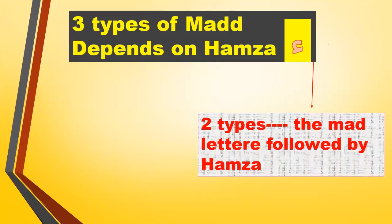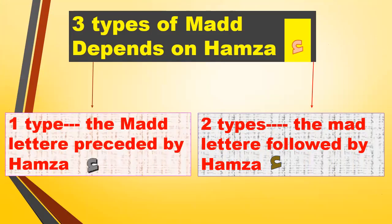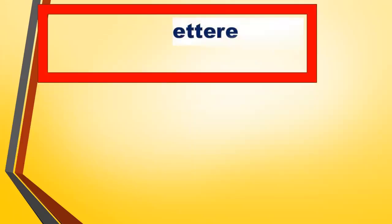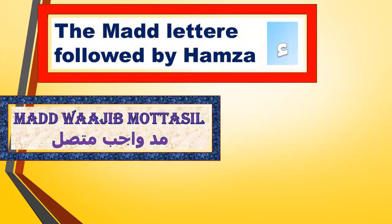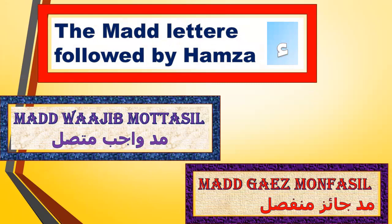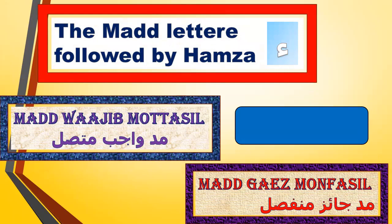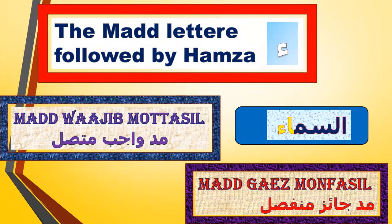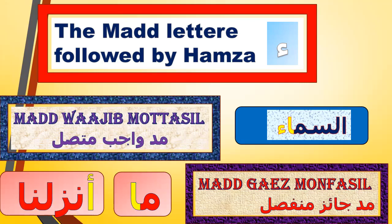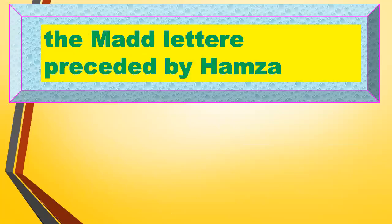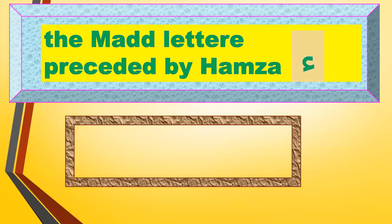There are two types: the Madd letter followed by Hamza, and one type where the Madd letter is preceded by Hamza. The Madd letter followed by Hamza has two types: Madd Wajib Muttasil and Madd Ja'iz Munfasil — where the Madd letter is in the same word, or at the end of a word with the Hamza at the beginning of another word. The Madd letter preceded by Hamza has one type only: Madd al-Badal.